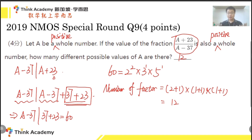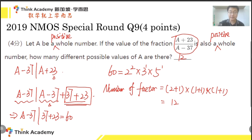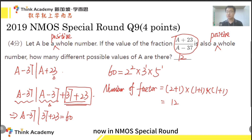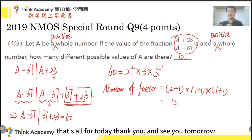Here we are facing a problem about whether a formula is divisible by another formula. The way to solve this is to change the numerator into a multiple of the denominator plus a whole number remainder; then the denominator must be a factor of that remainder. In primary school, number theory is just about numbers, but in secondary school it considers formulas. In NEMOS special round we see such types of questions, so we should know how to solve them. That's all for today. Thank you, and see you tomorrow.